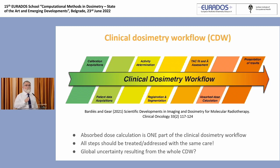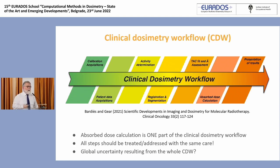When you consider all the steps, they go from the calibration of the imaging systems, acquisition of patient images, quantification, assessment of the activity present in the patient, segmentation — defining regions of interest from which you want to get the activity — then registration, because images come at different time points and the patient may not be positioned exactly the same way from one day to the next. Then, according to the MIRD formalism, integrating the time-activity curve gives you the number of decays in the volume of interest. Then you have the absorbed dose calculation.